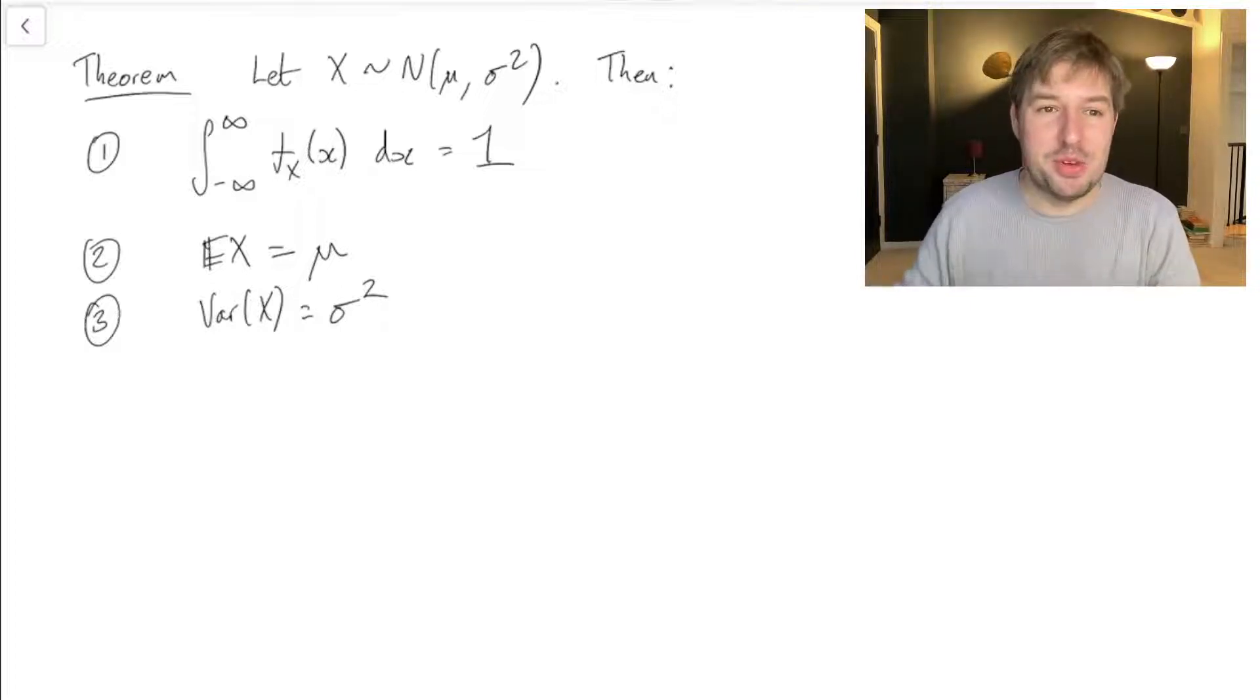What I do recommend is reading the proof for number 1, that the integral of the PDF does indeed go up to 1, because that proof involves one of the most outrageous tricks in the whole of undergraduate mathematics. If you haven't seen how to prove the normal PDF integrates to 1 before, the first time you see it, it will take your breath away with its outrageousness. It's so outrageous that I didn't feel like I could make it an examinable part of the course, but it is kind of astonishing, so I'd recommend reading that if you haven't seen it before.